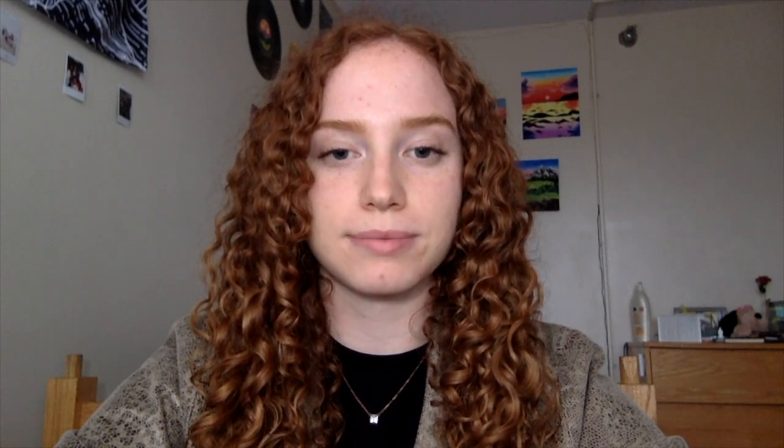Hi, my name is Jamie Griggs. I am a third-year co-terminal student majoring in civil and structural engineering. My research topic was an investigation on correlation between density and fatigue fracture prediction of human bone. To first give a little background information on this topic, I will be talking about bone fatigue and bone density.